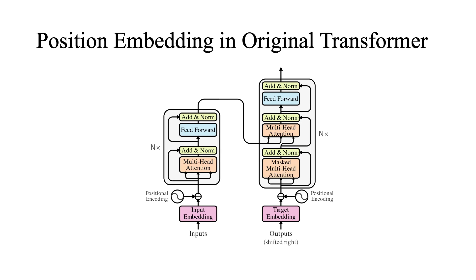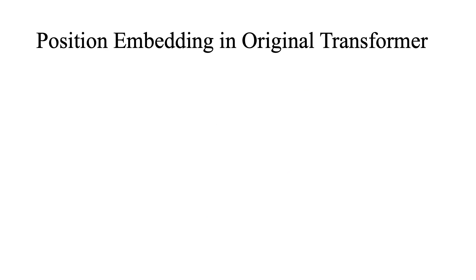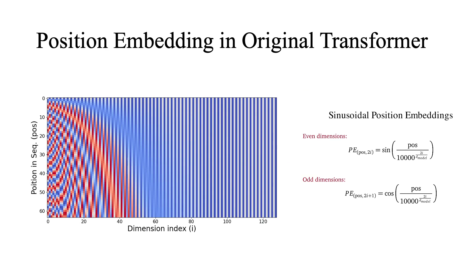If you recall from the Transformer architecture, we have the position embedding denoted as PE that is added to the token embeddings for both the encoder and decoder. These position embeddings are based on the sine and cosine functions. Transformer uses two functions for the odd and even positions as shown here. The heat map displayed here shows how these embeddings look like. These sinusoidal-based embeddings help the model to generalize to unseen sequence lengths.